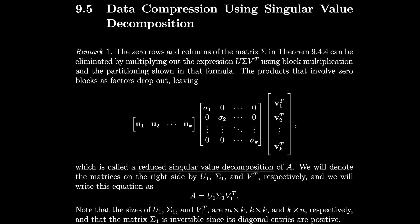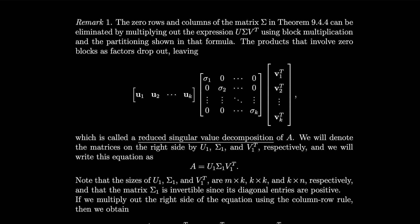Note that the sizes of U₁, Σ₁, and V₁ᵀ are m by k, k by k, and k by n, respectively. So this k — this k by k — is basically the rank of the matrix A. Note that the matrix Σ₁ is invertible since its diagonal entries are positive.